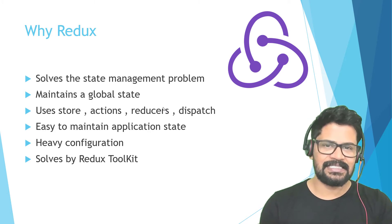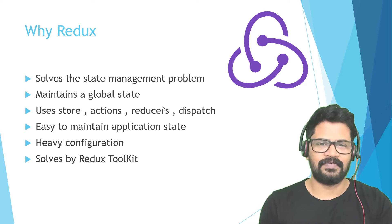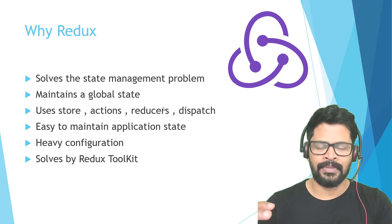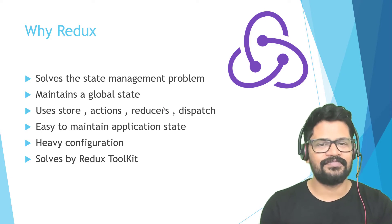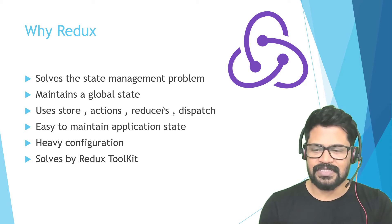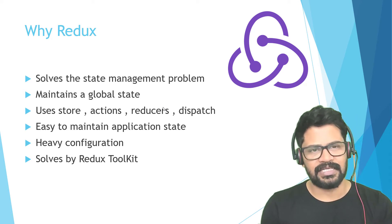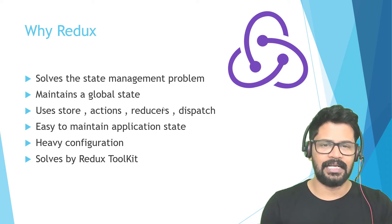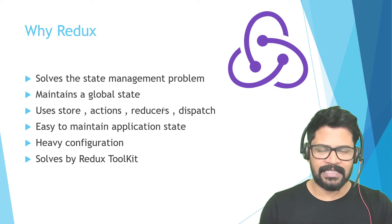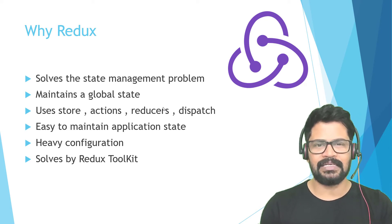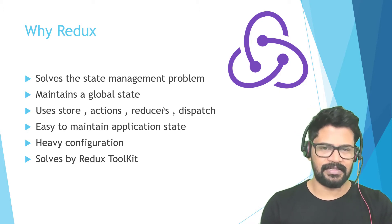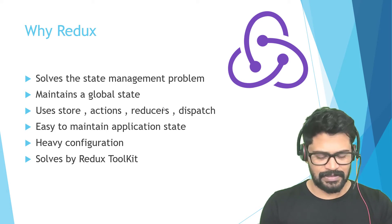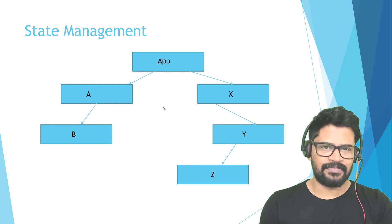The main approach behind Redux is that it maintains a global state. Generally in React.js, every component maintains its own state using the useState hook. Redux instead says you maintain the state in a single global location. Redux uses terminologies like store, actions, reducers, dispatcher, and selectors. It makes application state easy to maintain, though it requires heavy configuration — which can be simplified using Redux Toolkit, the newer version of the Redux library.